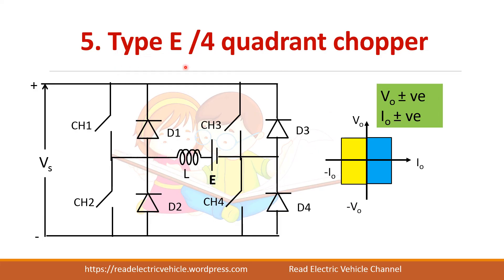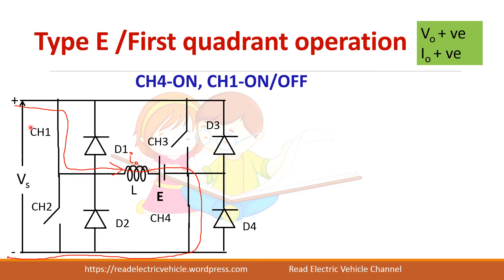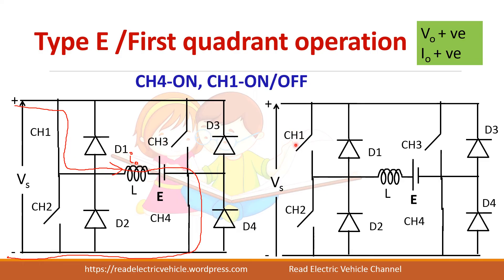Next is Type E, or the four-quadrant chopper, which can operate in all four quadrants — voltage can be positive or negative, and current can also be positive or negative. For first quadrant operation, CH4 is kept on and CH1 is turned on and off. When CH1 is on, current flows in the positive direction so I-naught is positive and voltage is connected to positive. When CH1 is turned off, current continues to freewheel through diode D2, so I-naught remains positive and voltage is zero.